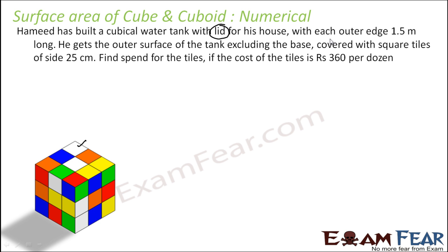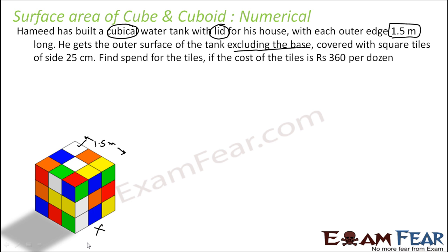Each outer edge is 1.5 meters. Since this is a cube, all sides are 1.5 meters. This lid has to be taken care of, but he gets the outer surface of the tank excluding the base — so we have four sides plus the lid, that is five sides.